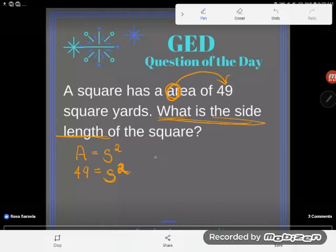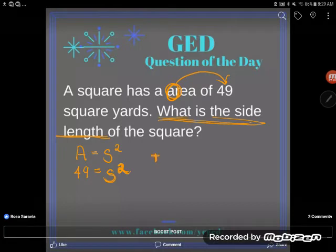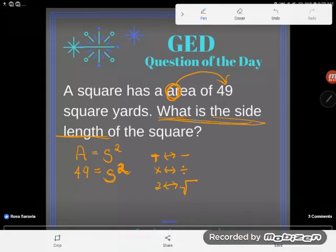A lot of students forget the opposite of squaring but remember let's talk about inverses a little bit. The opposite of add is subtract. The opposite of multiply is divide but what is the opposite of square? Square root. That square root symbol is the opposite of square.